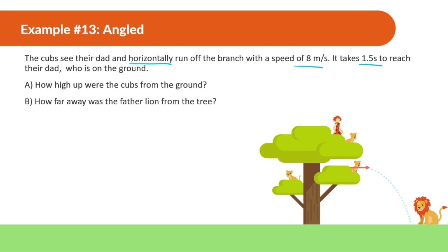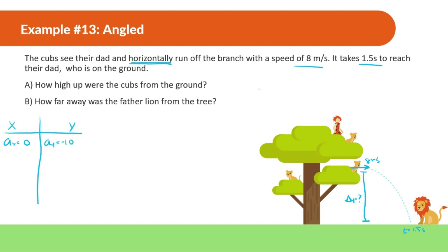The cubs horizontally run off the branch — so this is a zero launch angle problem. The velocity in x is 8 meters per second, and since it's a horizontal launch, the initial velocity in y is 0. Setting up our X and Y chart: acceleration in x is 0, acceleration in y is negative 10. Time is the same in both: 1.5 seconds. We want to find the displacement in y — how high the cub was from the ground.